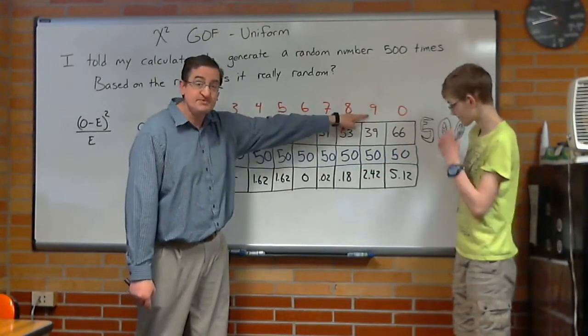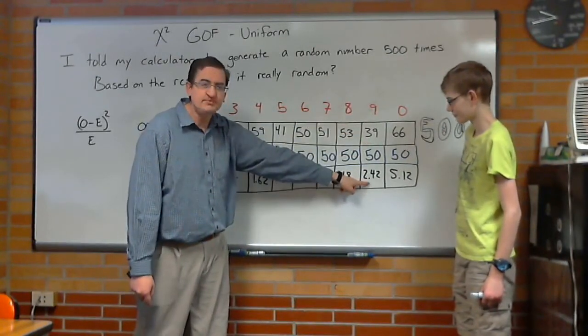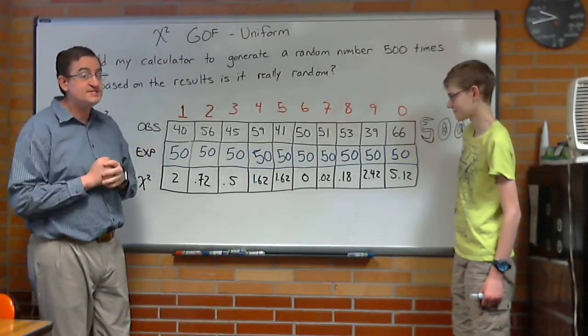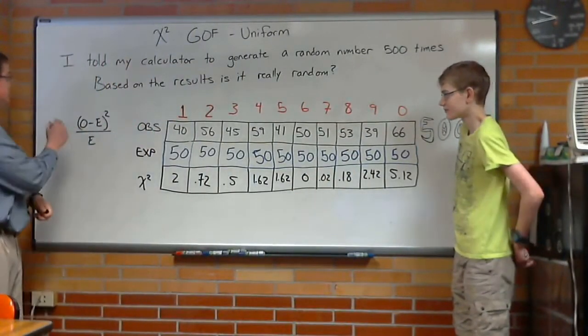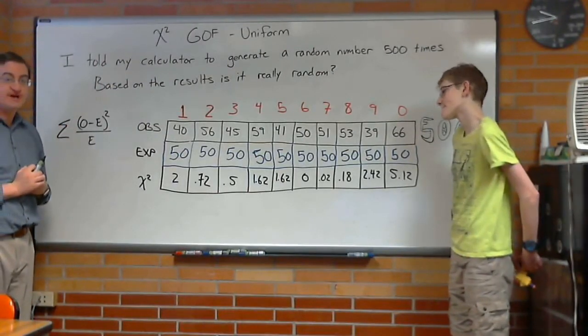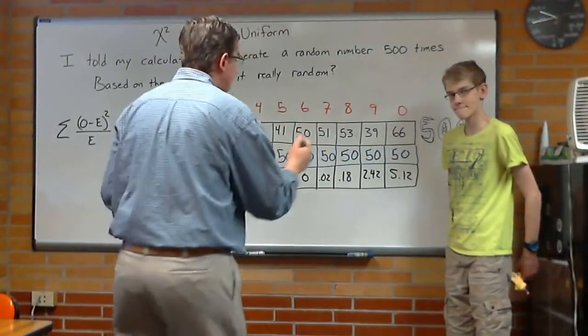Now, I thought 9 was going to have a big value, because 39 seems like it wasn't enough, but it's only half as weird as the 0 is. So, there's where I'm starting to worry, is this going to turn out to be wrong or not? Well, to find out, we are going to add up all our chi squared values, which I have that right here, 14.2.